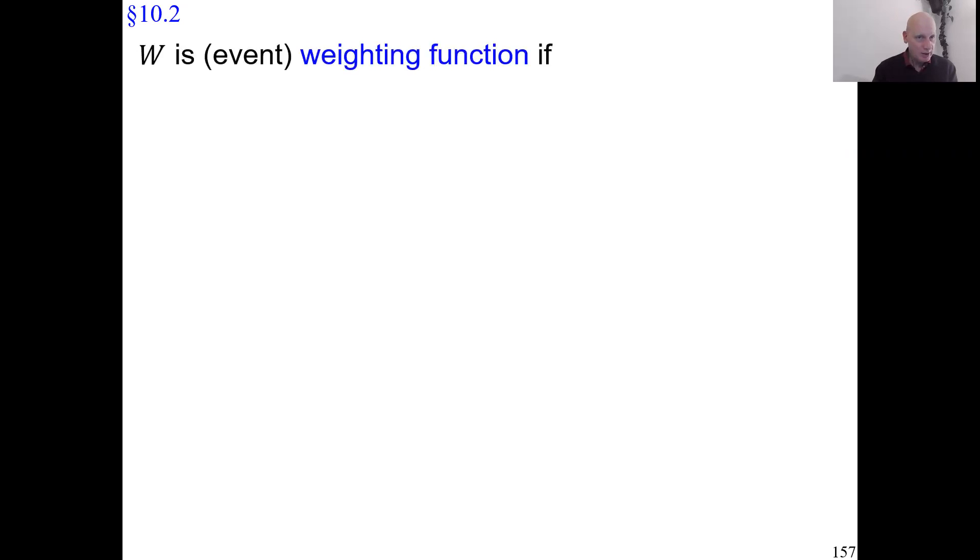First the preparatory definition. Capital W, I call it a weighting function or event weighting function if the following things hold. This is notation for the collection of all the subsets of capital S. So this is the set of all the events.